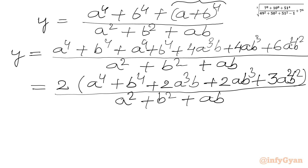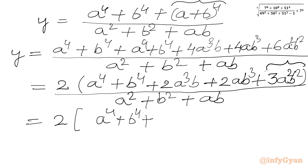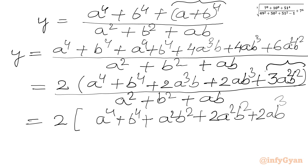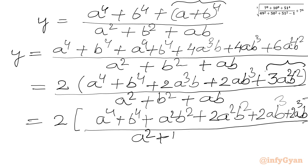Now I will split the term 3A squared B squared as A squared B squared plus 2A squared B squared. So I can write 2 times, in brackets, A to the power 4 plus B to the power 4, plus A squared B squared, plus 2A squared B squared, plus 2AB cubed, plus 2A cubed B. This will be our numerator, and denominator is A squared plus B squared plus AB.